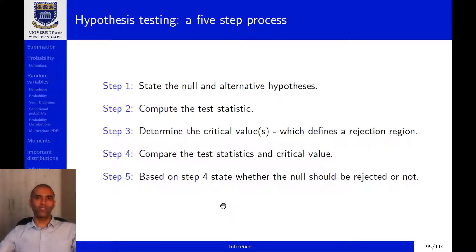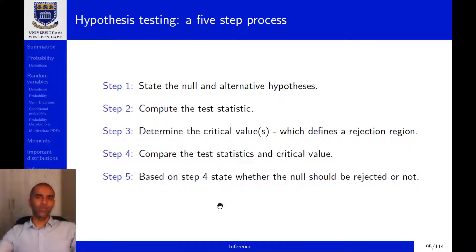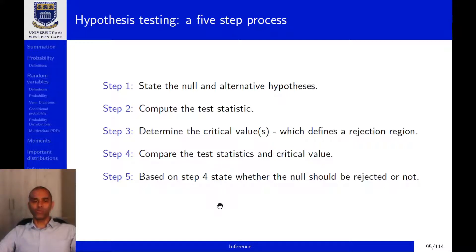Step one: state the null and alternative hypotheses. Step two: compute the test statistic. The test statistic used will depend on the probability distribution followed by the given test statistic, which in turn depends on the parameter we are trying to estimate. If we are estimating the mean and want to test hypotheses related to mu, we'd use the t-distribution; if we are estimating the population variance, we'd use the chi-square distribution.